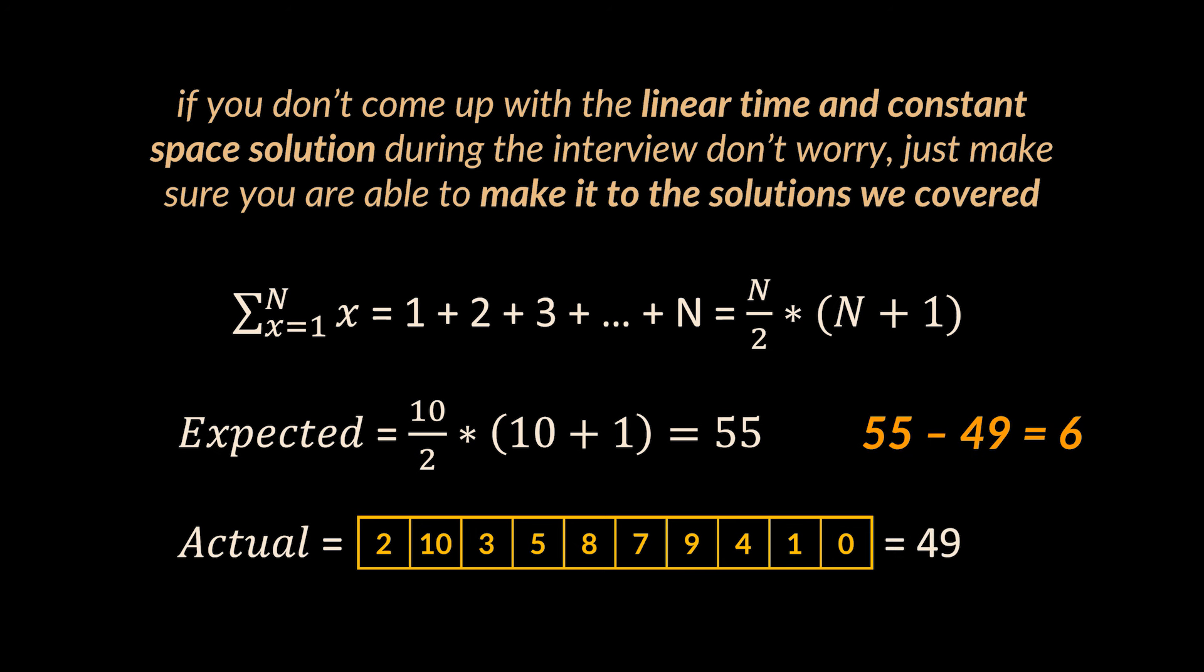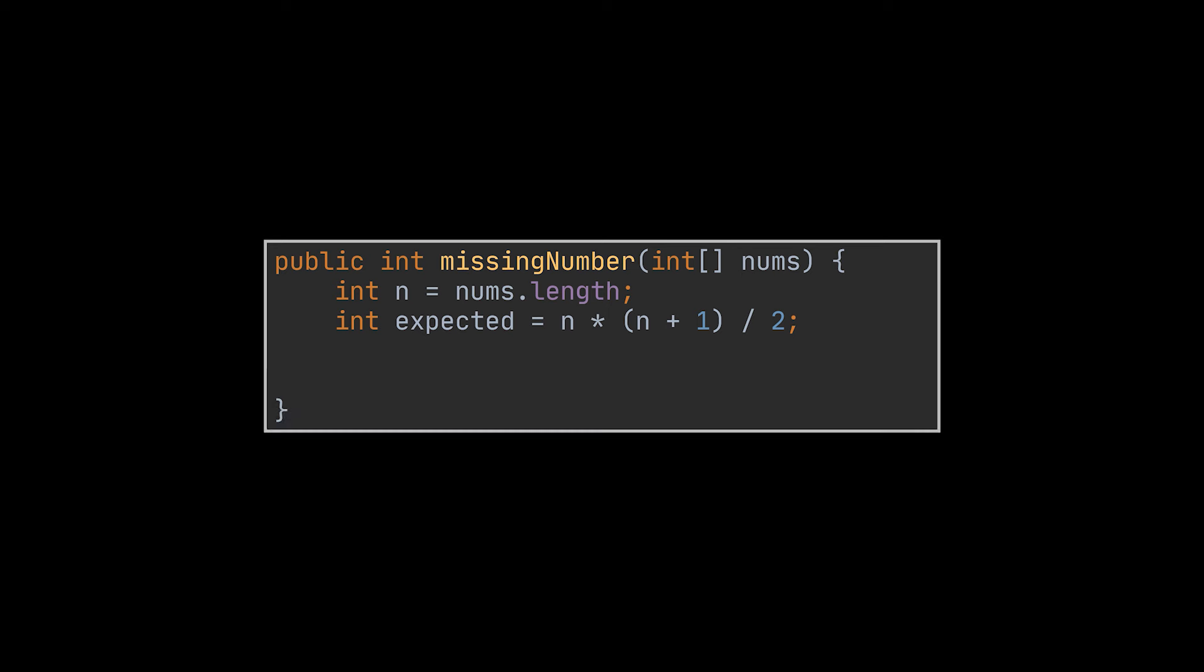Why? Well because 6 is missing, and 6 is none other than 55 minus 49. Implementing this is very straightforward. We first calculate the expected sum using Gauss's formula. Then, calculate the actual sum we have. The result is the subtraction of both values. That's it, the optimal solution to the first missing number problem.